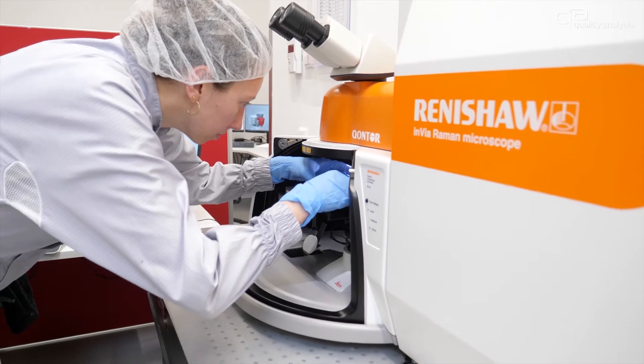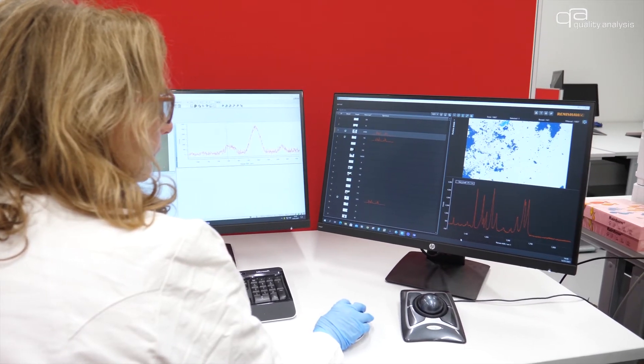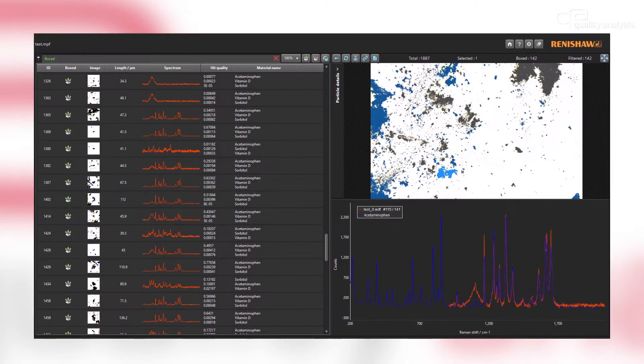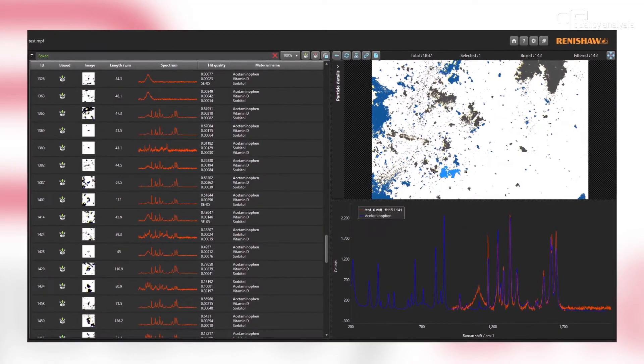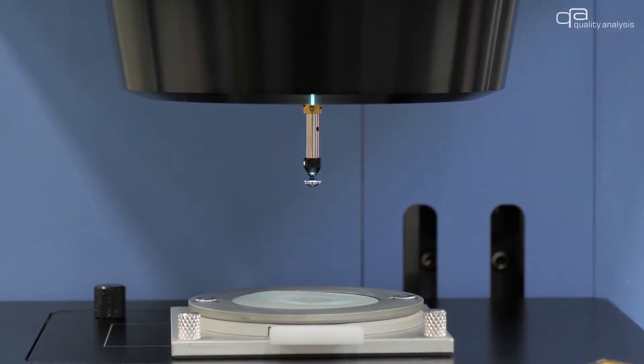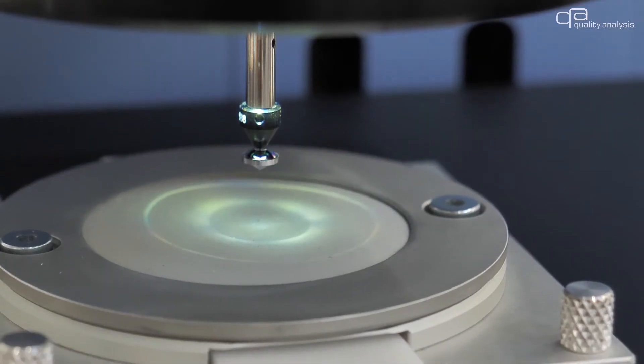Through fully automated analysis using Raman spectroscopy we identify organic particles, fibers and polymers. Raman inactive particles are analyzed by FTIR.